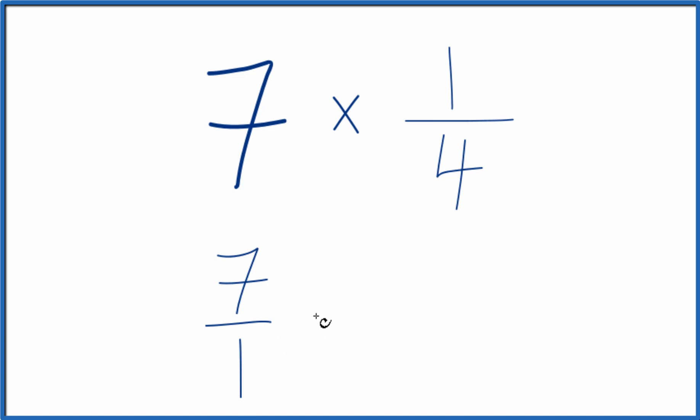Now we have this fraction. We multiply that times 1 fourth. When we multiply fractions, we multiply the numerators and the denominators.